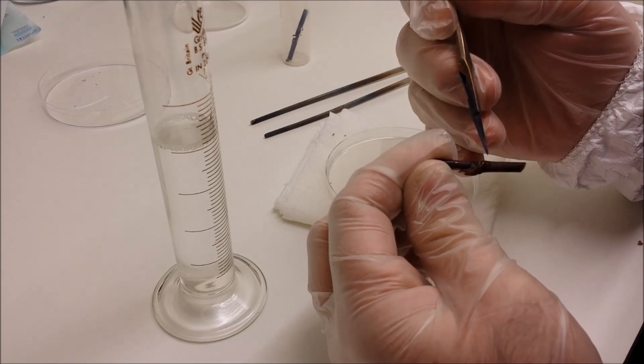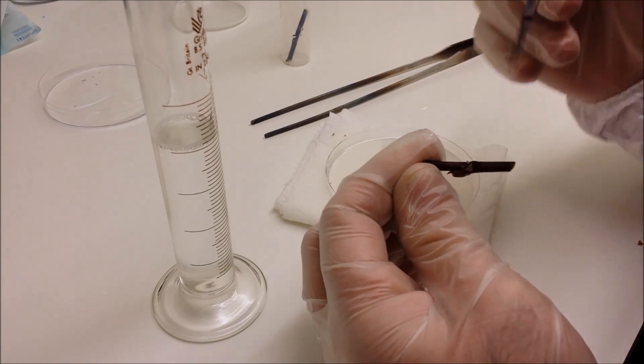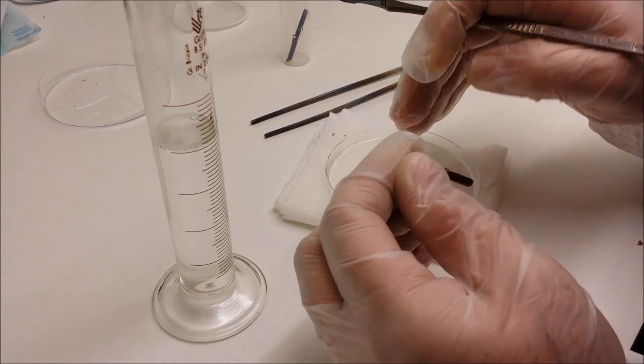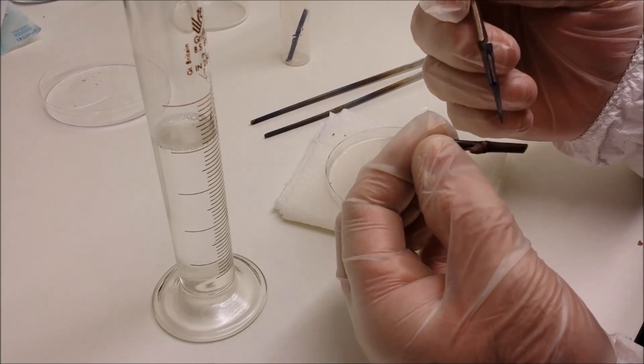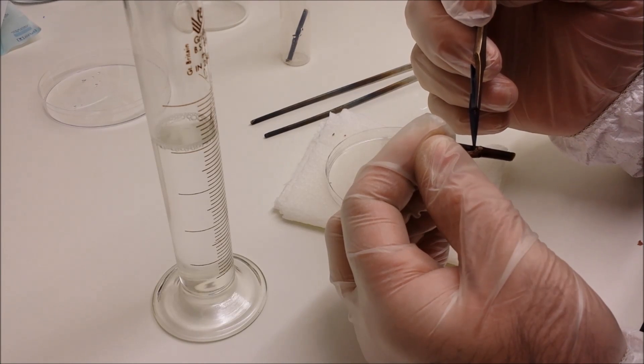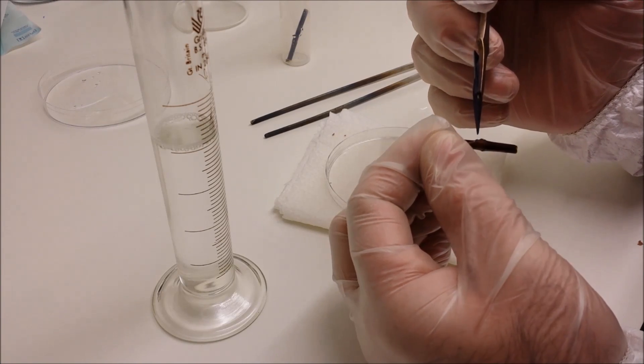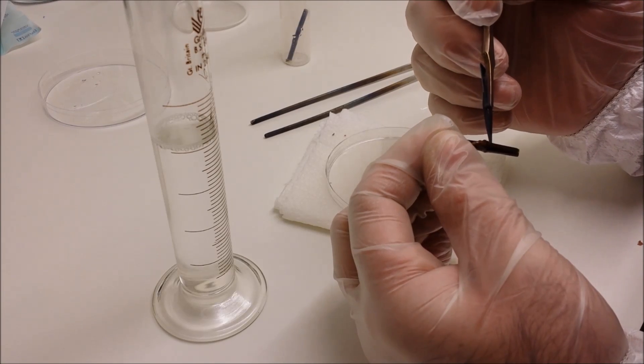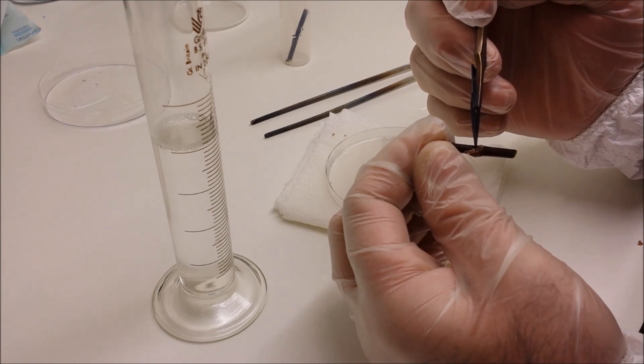And the work surface that you can see in the background, the white, has also been completely sterilized by wiping it with IPA, which is isopropyl alcohol, and as the glass, all the vessels and all the utensils, everything's been wiped down and sterilized.